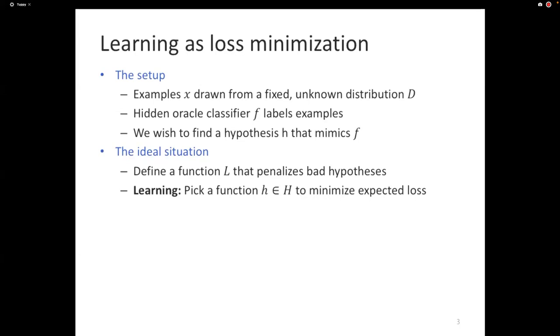The expected loss because it's an expectation over examples drawn from that distribution. In other words, the goal of learning is to minimize the expected value, the expectation where examples are drawn from the possibly unknown distribution, of the loss function applied to the prediction and the ground truth. So h of x is the prediction of that hypothesis that we are currently entertaining. f of x is the ground truth.